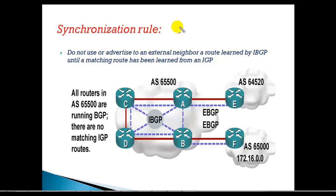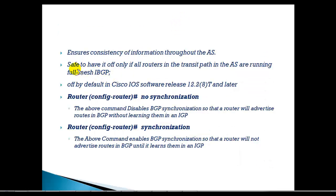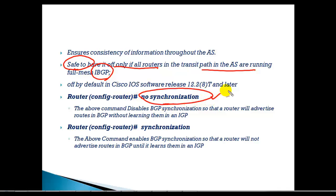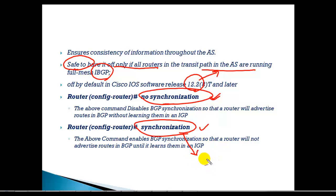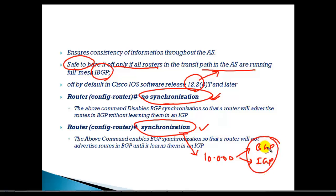This rule was there to ensure consistency. It is always safe to have it off, but only if all the routers in the transit path are running a full mesh of IBGP. We can disable it with the 'no synchronization' command. From IOS 12.2 release, most IOS versions have 'no synchronization' as the default. If you want to enable it back, use the 'synchronization' command. When synchronization is enabled, a route must be advertised in both BGP and IGP in order to be advertised to any EBGP neighbor.